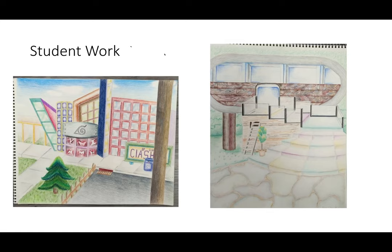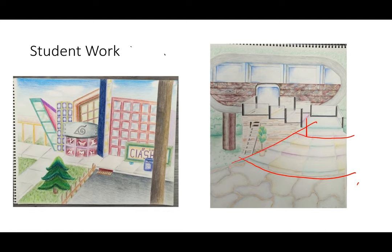Here, students did the same thing as the professional artists above. They learned how to organize the space of the artwork through the stairs design and the environmental design. For the image on the right, we see how the first step is wider than the last step and disappears towards the vantage point. The artist organizes space by showing direction and the perspective of the stairs.